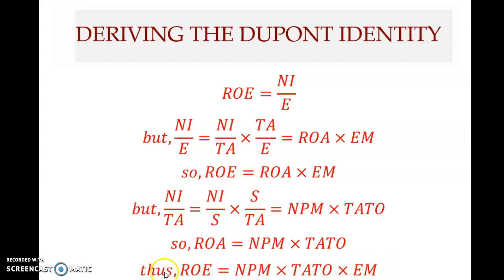This method of breaking ROE into three components is called the DuPont analysis.